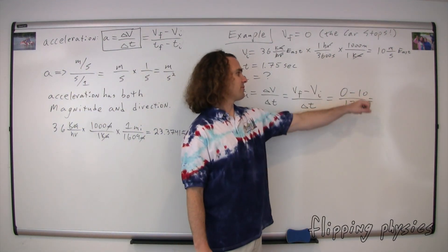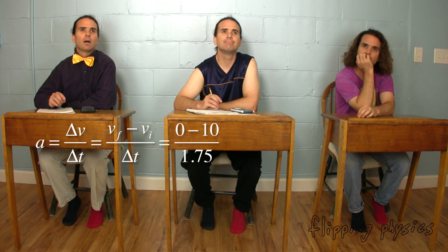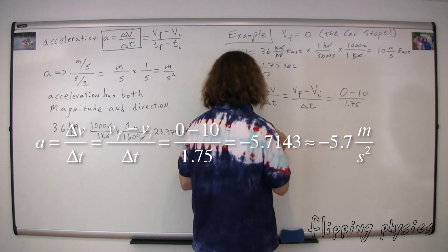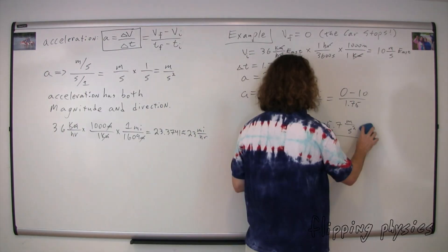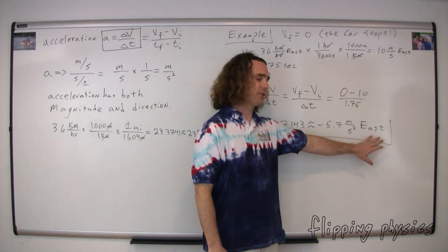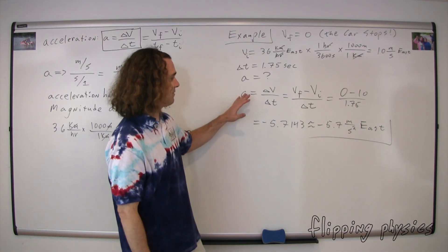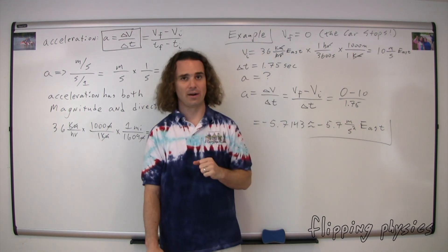So we end up with our velocity final of zero minus our velocity initial of 10 meters per second divided by our change in time 1.75 seconds. And what do we get now for an answer? We get negative 5.7143, which rounds to, with two significant digits, negative 5.7 meters per second squared. Negative 5.7 meters per second squared east. You need to add east to the direction. Yes! Please include the direction for acceleration. Remember, acceleration, just like displacement and velocity, has both magnitude and direction. Therefore, for an answer, you need to give acceleration with a direction: negative 5.7 meters per second squared east. Negative 5.7 meters per second squared is the magnitude. East is the direction.